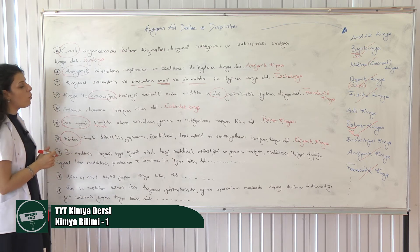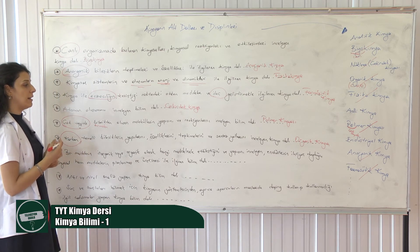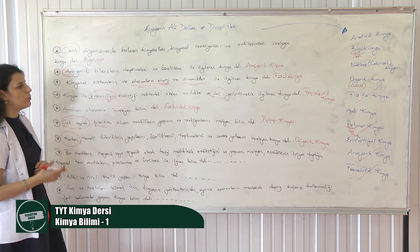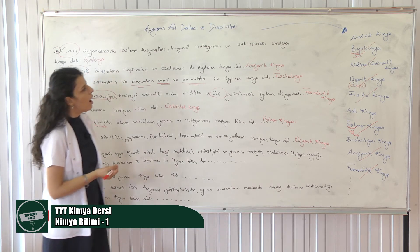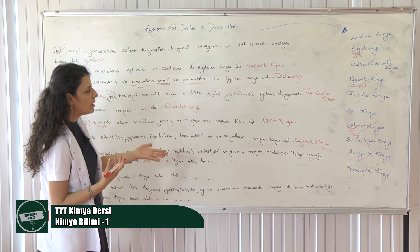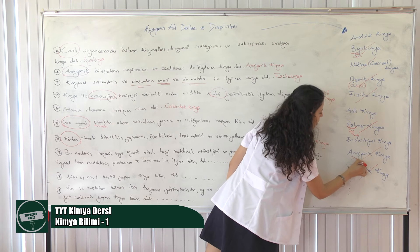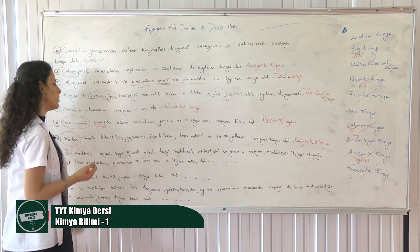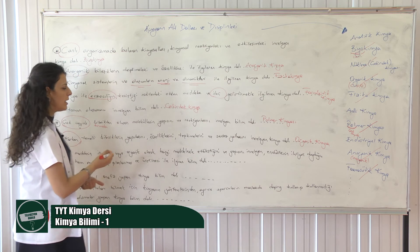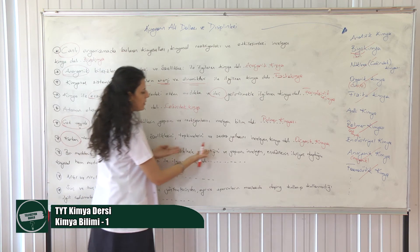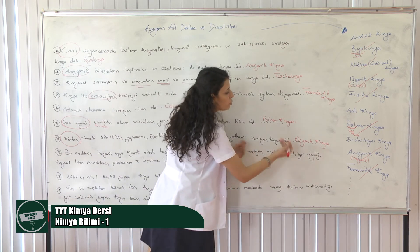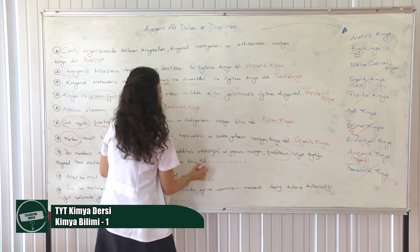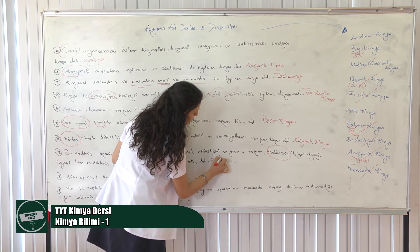Bir maddenin inorganik veya organik olarak hangi maddelerle etkileştiğini, yapısını inceleyen; endüstrinin ihtiyaç duyduğu kimyasal ham maddelerin planlanması ve üretilmesiyle ilgilenen kimya dalı. İnorganik kimya olabilirdi ama hem inorganik hem organik demiş, ikisini de eledik. Burada 'endüstrinin ihtiyaç duyduğu' demiş. O zaman endüstriyel kimya olacak.